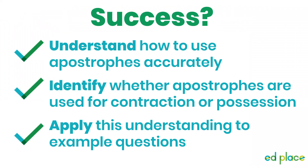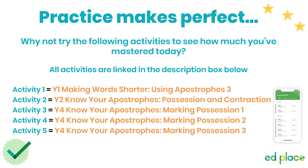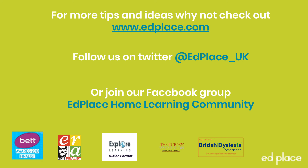Let's recap what we set out to do today. Do you now understand how to use apostrophes accurately? Can you identify whether apostrophes are used for contraction or possession? Are you able to apply this understanding to example questions? If you have met one or all of these, well done — you have met the objective for today. Some of you may need a little more practice; try Activity 1 or 2 to build confidence, then move on to Activities 3 and 4 before trying Activity 5 again. We look forward to working with you again soon — keep practising!